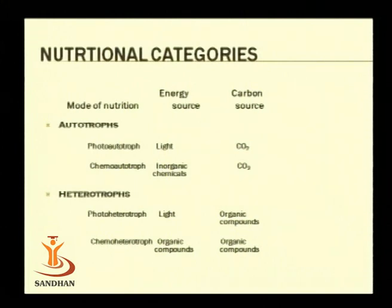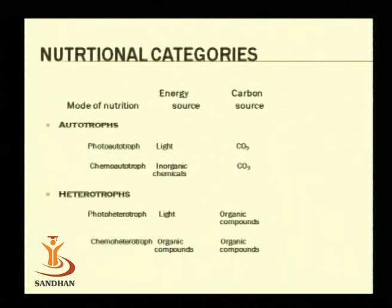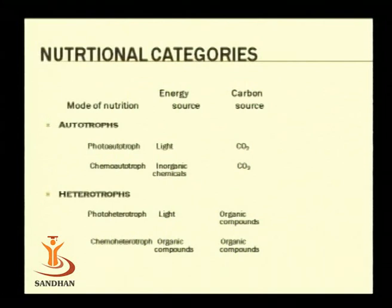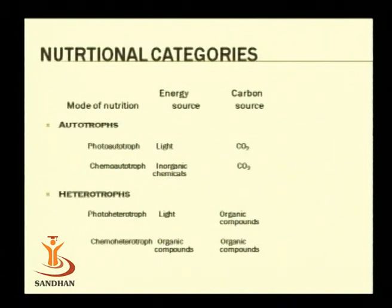Depending upon the mode of nutrition, you may broadly classify bacteria as autotrophs as well as heterotrophs. Autotrophs could be phototrophs or chemoautotrophs, and among heterotrophs you may be a photoheterotroph or chemoheterotroph. The kind of substrates organisms use as a source of energy will decide the nutritional category of that particular group.